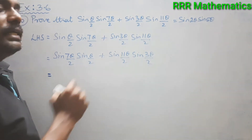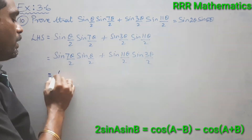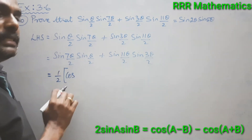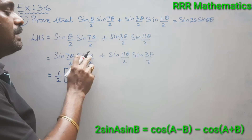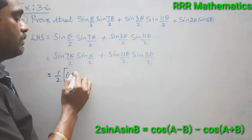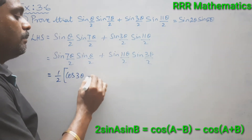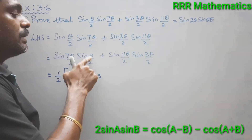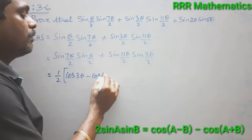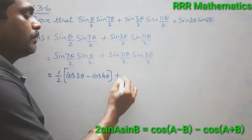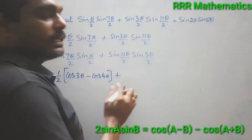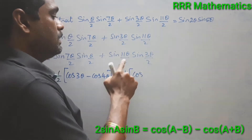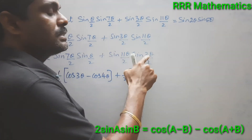Now applying sin A·sin B = ½[cos(A−B) − cos(A+B)]: for the first term, A=7θ/2, B=θ/2, so A−B = 6/2 = 3θ and A+B = 8/2 = 4θ, giving ½[cos 3θ − cos 4θ]. For the second term, A=11θ/2, B=3θ/2, so A−B = 8/2 = 4θ...